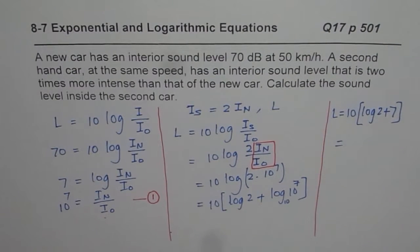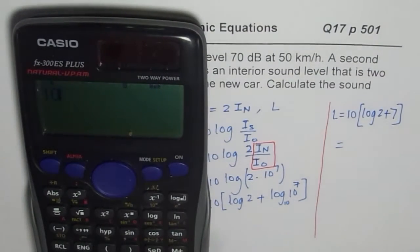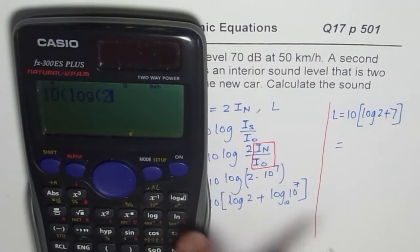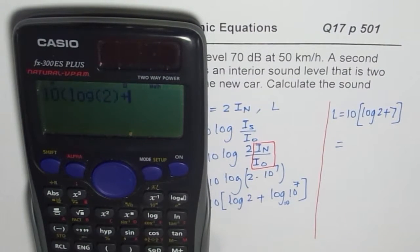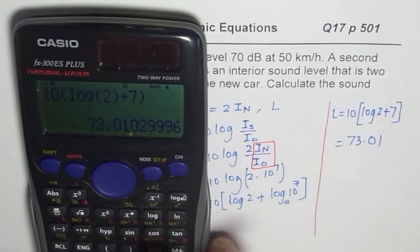So the loudness for the second-hand car should be 10 within brackets log of 2 plus 7, bracket close, equal to 73.01.